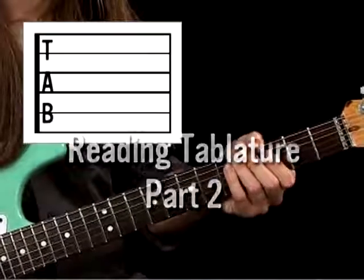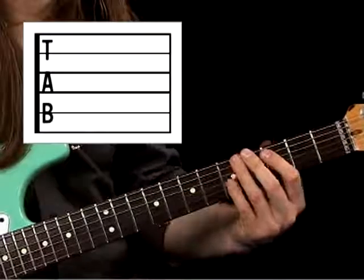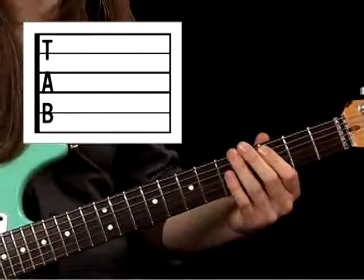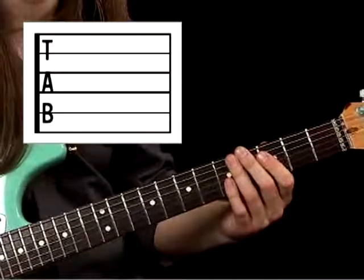So, the next section we're going to be doing after this tablature section is the C major scale, and we're going to look at how to play that on tab right now.